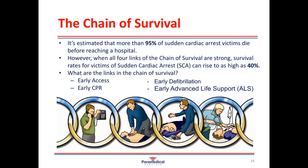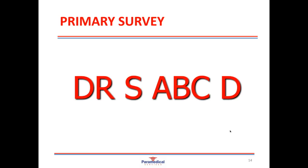The last link in the chain of survival is early advanced life support or ALS. While we are learning basic life support, advanced life support can be provided by anyone with advanced training — a paramedic, nurse, doctor or other advanced medical health professional. The DRS ABCD primary survey approach ties in directly with the chain of survival: sending for help is early access, compressions is early CPR, defibrillation is early defibrillation, and paramedic arrival is early ALS.